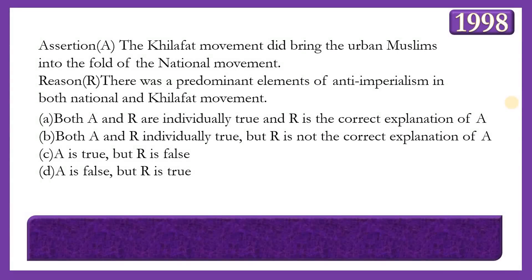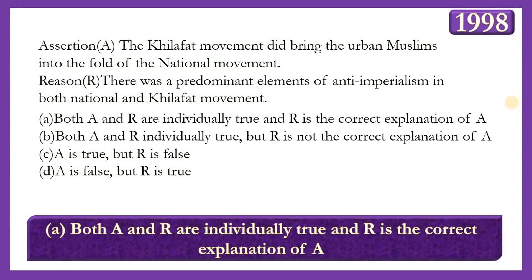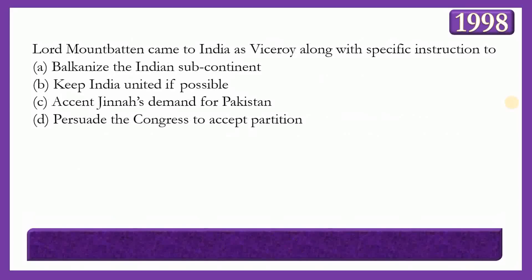Next assertion-reason question. Assertion: The Khilafat movement did not bring the urban Muslims into the fold of the national movement. Reason: There was a predominant element of anti-imperialism in both the national and Khilafat movements. The answer is option A — both A and R are individually true and R is the correct explanation of A.